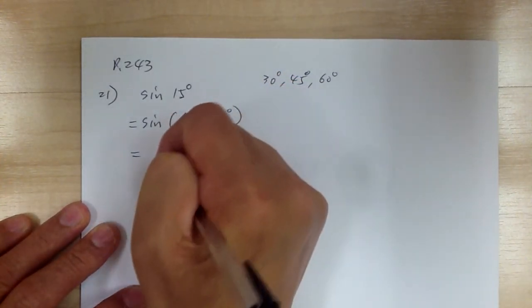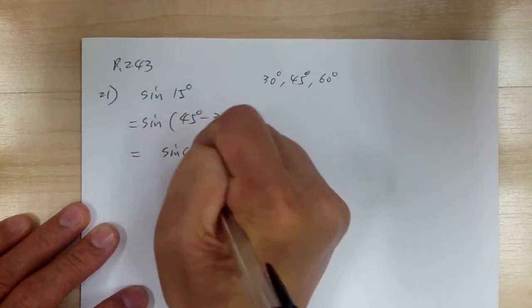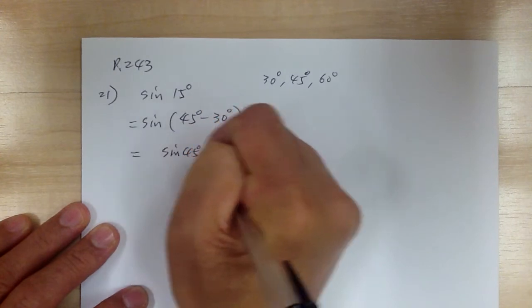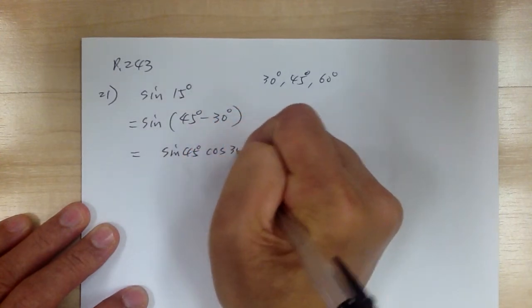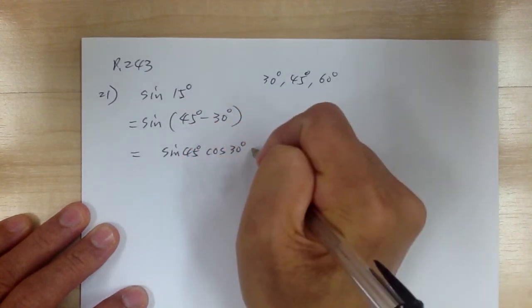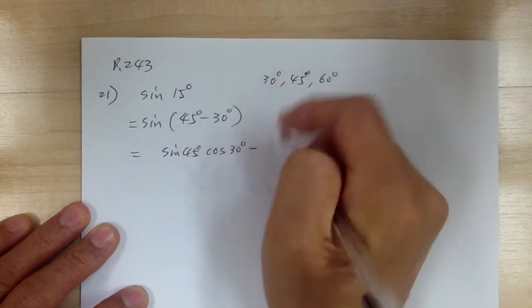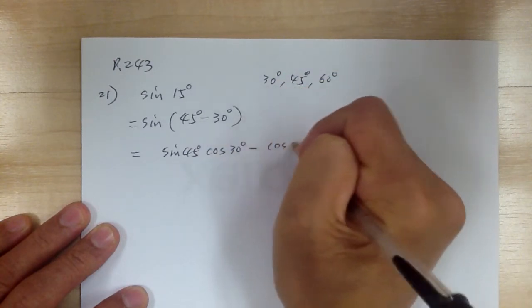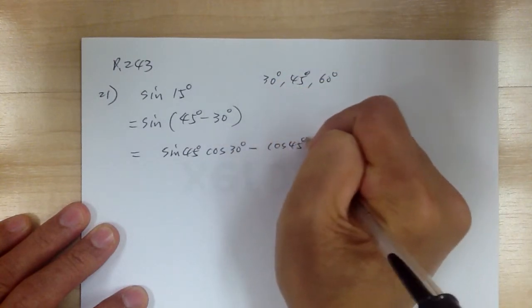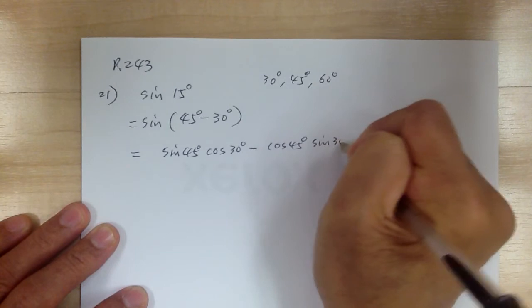This is going to give you sine 45 cosine of 30, minus cosine of 45 sine of 30.